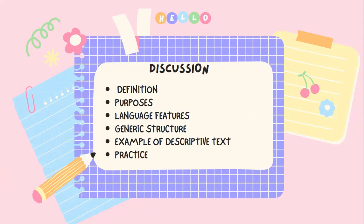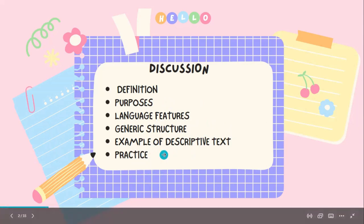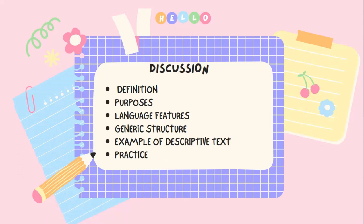Pembahasan di video ini: pertama, Miss akan kasih definisinya dulu atau penjelasan mengenai apa itu descriptive text. Yang kedua, yaitu purpose atau tujuan dari descriptive text. Yang ketiga adalah language feature atau ciri-ciri kebahasaan. Yang keempat, yaitu generic structure atau susunan paragraf. Berikutnya contoh, dan yang terakhir practice atau latihan.